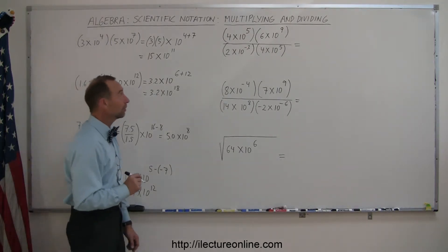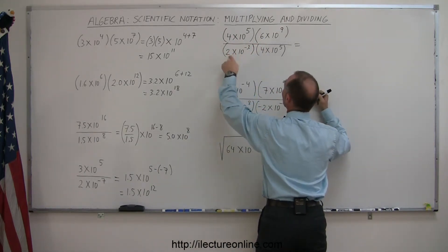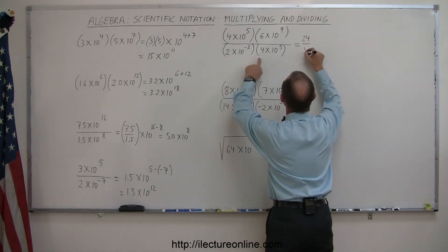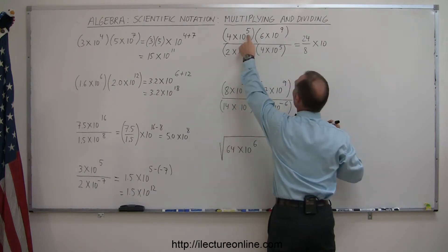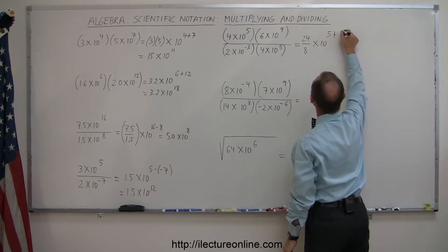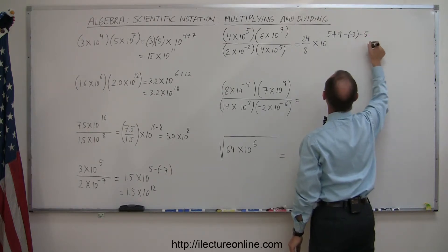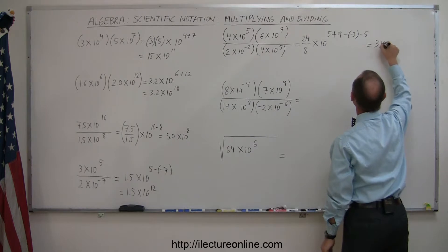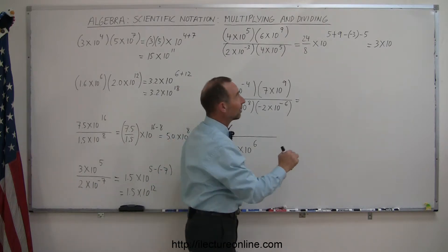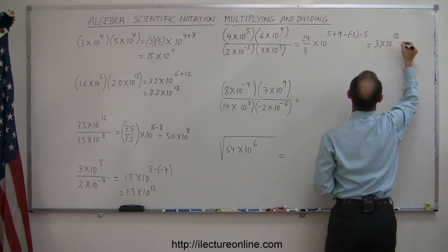Now something a little more difficult. We multiply 4 times 6 in the numerator, and 2 times 4 in the denominator, giving 24 divided by 8. For the exponents, we add those in the numerator and subtract those in the denominator: 5 plus 9, minus negative 3, minus 5. That gives 24 divided by 8, which is 3, times 10 to the 12th power — since 5 plus 9 is 14, minus negative 3 is plus 3 giving 17, minus 5 is 12.